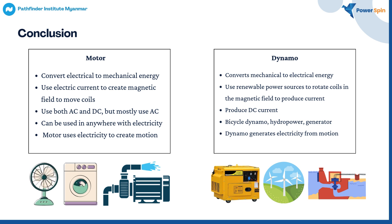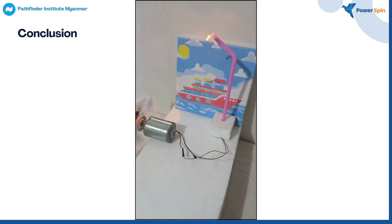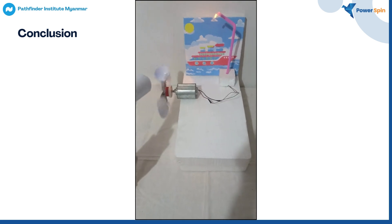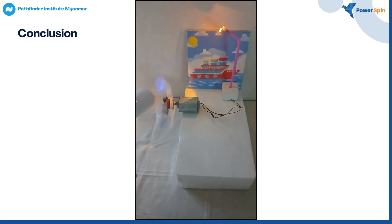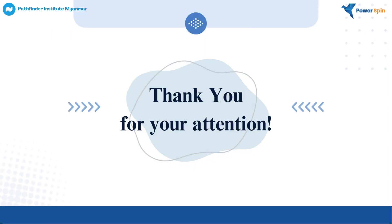Dynamo, on the other hand, converts mechanical energy to electrical energy. Not only can it be used at non-renewable power sources, it can also be used at renewable power sources. It produces DC current. It is mostly used at bicycle light dynamo, hydropower plants and generators. So basically, dynamo generates electricity from motion. We can also see this at the project shown previously — when the rotor blades rotate in the correct direction, which is from north to south, it provides electrical energy, which is the LED light shown as proof. That's all for my project presentation. Thank you for watching till the end.